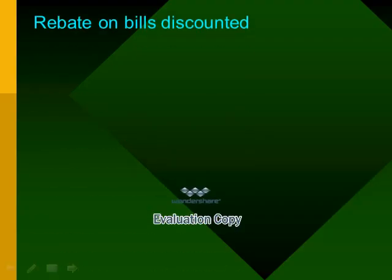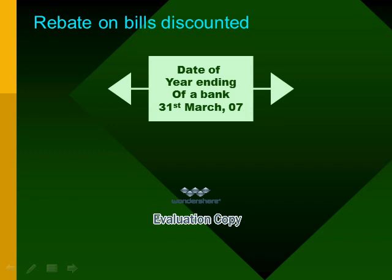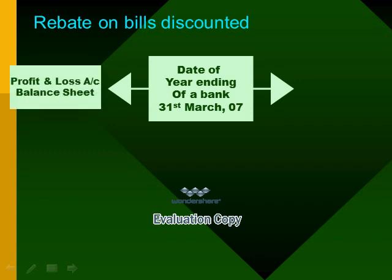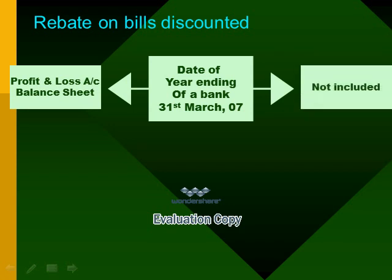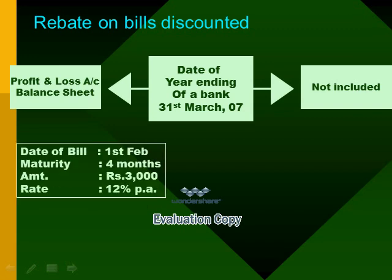Now let us understand the concept of rebate on bills discounted with the help of a simple example. Suppose the date of year ending of the bank is 31st of March 2007. The bank will prepare its balance sheet and profit and loss account for the period up to 31st March 2007. Items of income, expenditure, assets, and liabilities falling after 31st March 2007 are not included in the balance sheet. Suppose the date of the bill is 1st February, this bill will mature after 4 months. The amount of the bill is Rs.3000 and the rate of discount charged by the bank is 12% per annum.